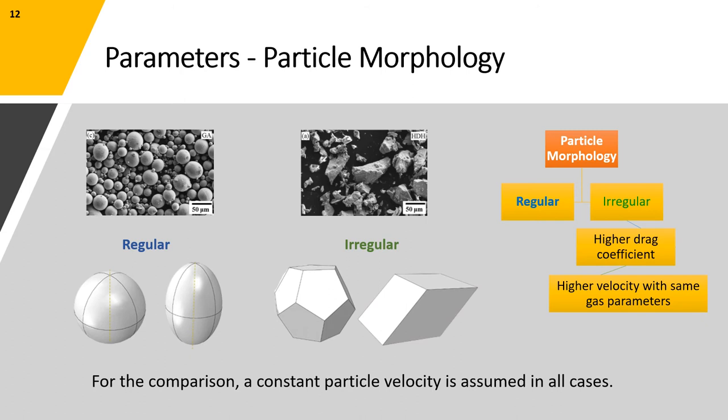So for a given and constant gas mass pressure and temperature, the irregular particles will achieve higher velocities. In this case, we considered four representative shapes that can be seen in the image with a constant and equal mass and also in all cases we considered equal velocities.